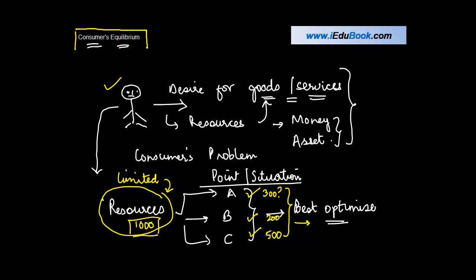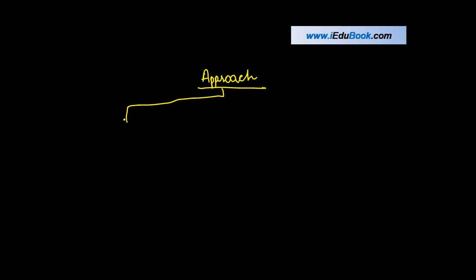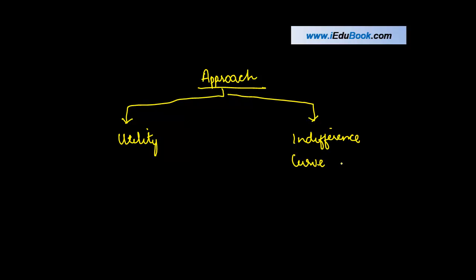When that allocation best meets his demands, the consumer is said to have reached equilibrium. Generally speaking, consumer's equilibrium is a situation in which the consumer is able to make the best allocation of resources to meet his various needs. There are basically two approaches through which consumer's equilibrium is analyzed.